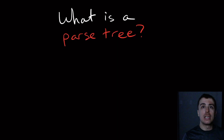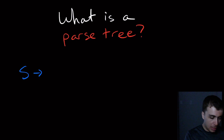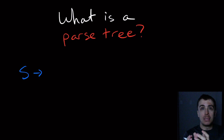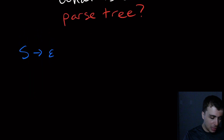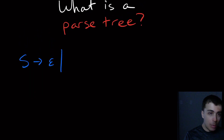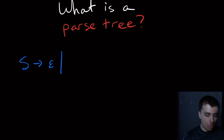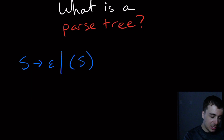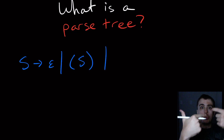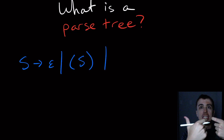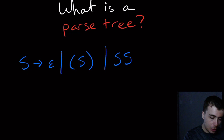You may have seen the context-free grammar for balanced parentheses, and I'm going to put it here again. A balanced set of parentheses is either an empty string, or a left parenthesis followed by something that is balanced followed by a right parenthesis, or we can have two sets of balanced parentheses next to each other.